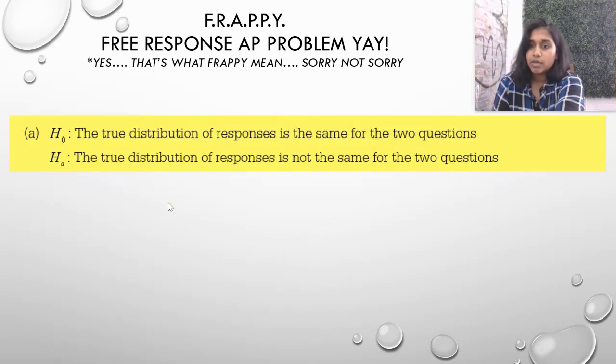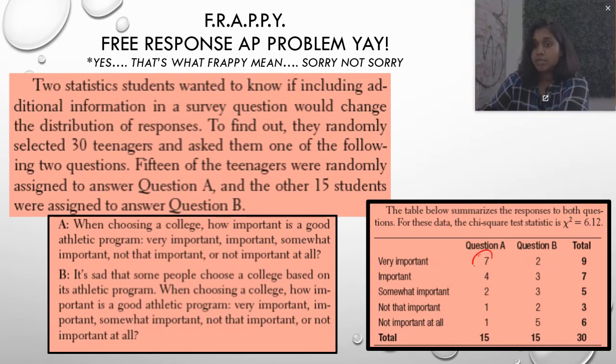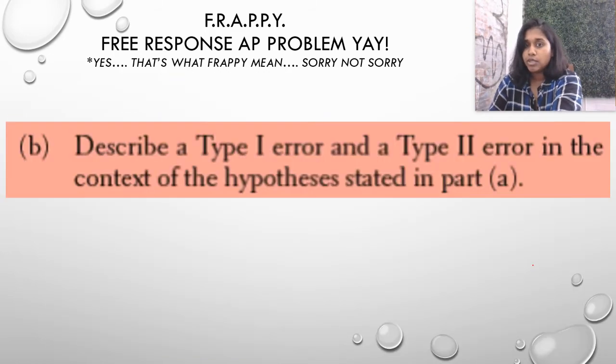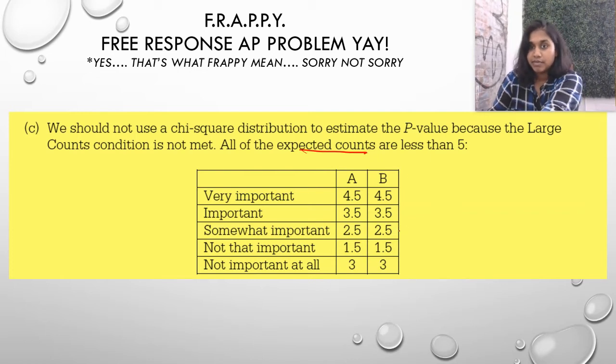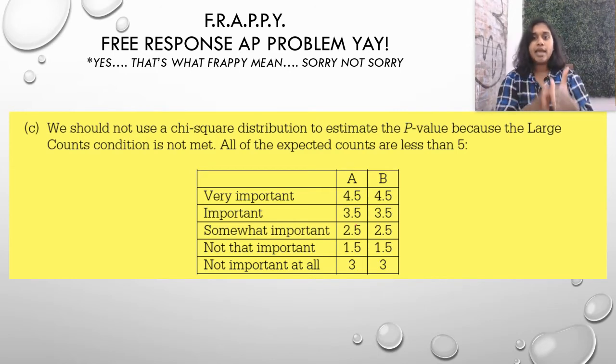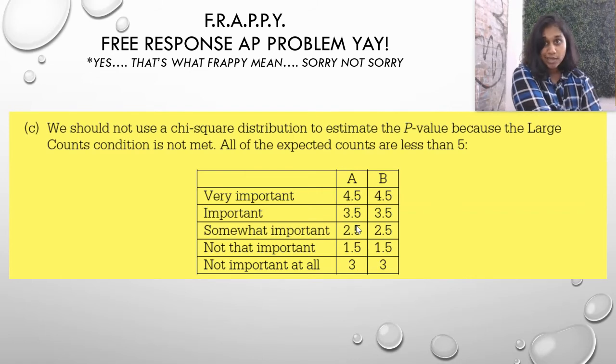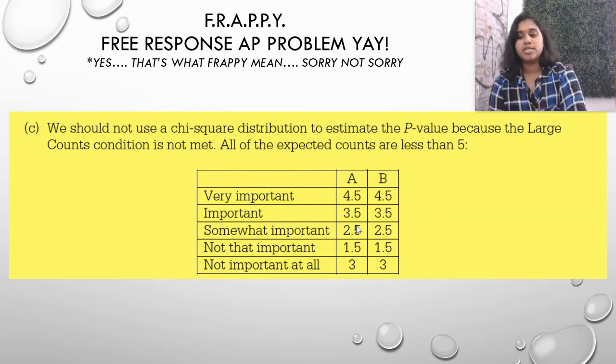All of the observed counts, or many of the observed, are over five or equal to five. Cool. But that's not where we look. It's the expected counts that have to be greater than five. And since they're all less than five, it doesn't meet large count's normal conditions. So we wouldn't actually apply a chi-square distribution. So the way that these kids are originally using their statistics, you, as a statistician, would say, no, no, no. It doesn't quite meet conditions. So we wouldn't actually apply a chi-square distribution to this problem.